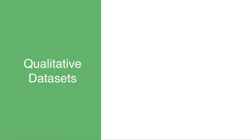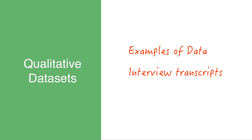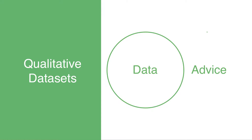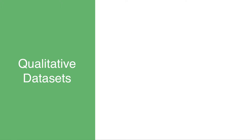The qualitative datasets include examples of various types of qualitative data, including interview transcripts and field study notes, as well as visual material. Accompanying the data is clear, easy-to-follow advice on how you might approach analysis of the data, making it perfect for students learning qualitative methods and for teachers looking for examples they can include in their research methods course.